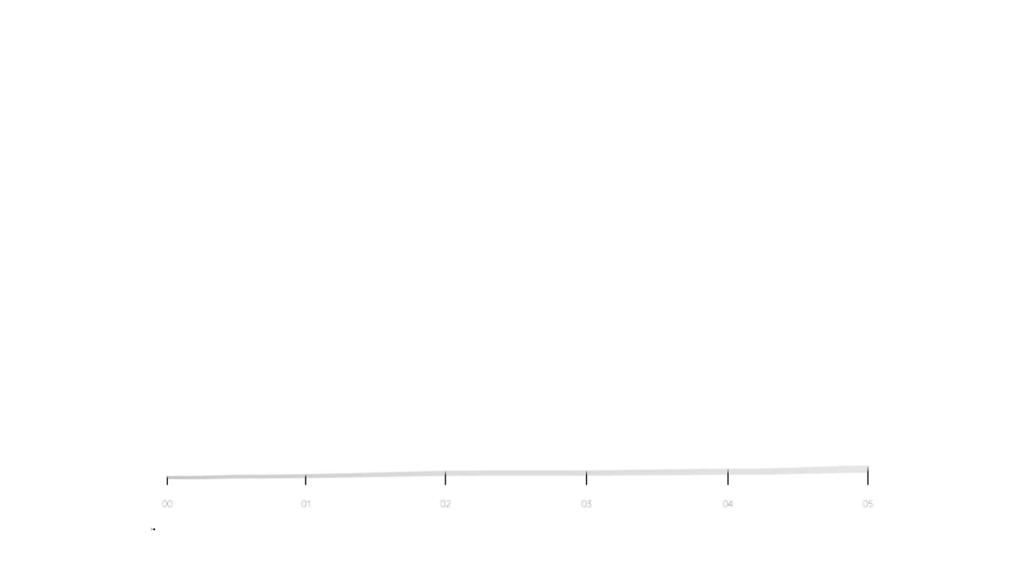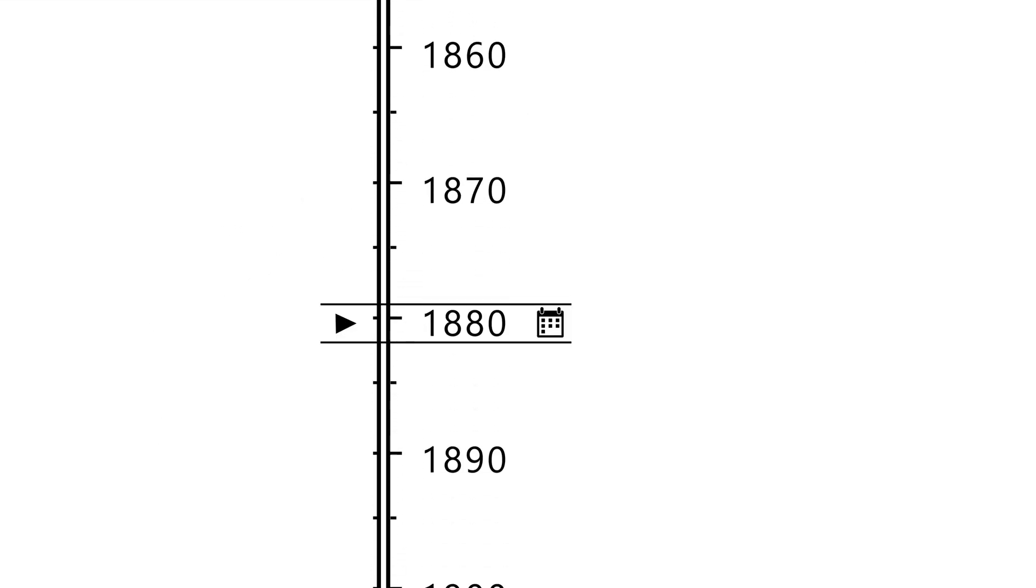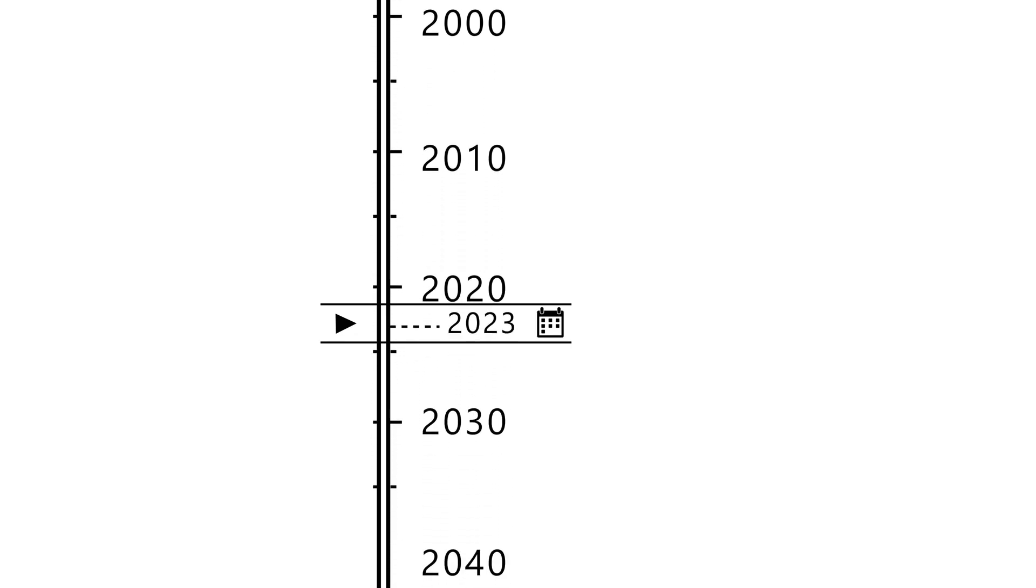However, because Betelgeuse is 650 light-years away, even if the explosion occurred today, we wouldn't see it for another 650 years due to the time it takes for light to reach us. It's therefore unlikely that this event will occur within our lifetime.